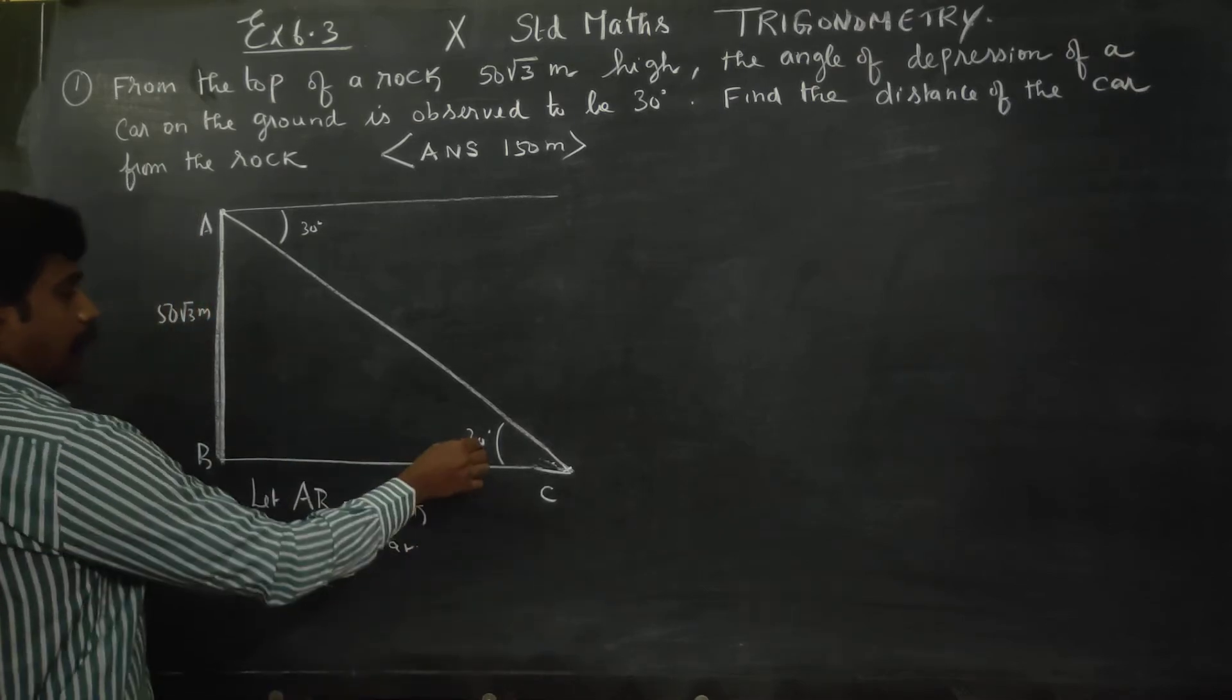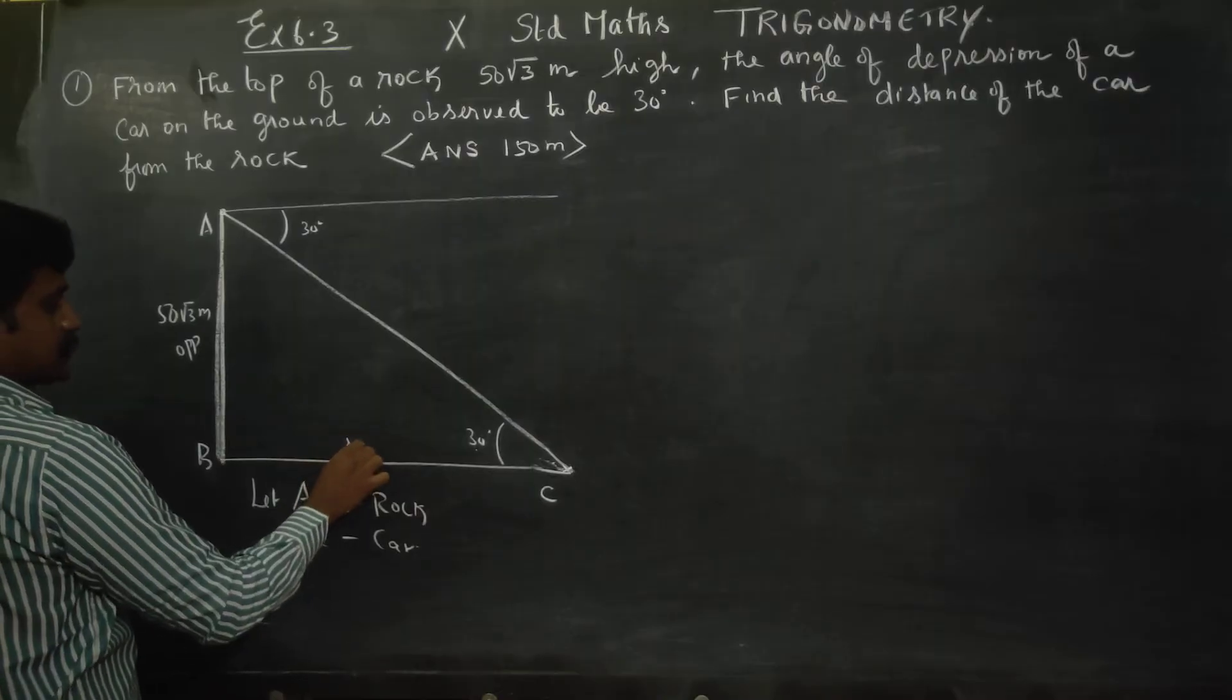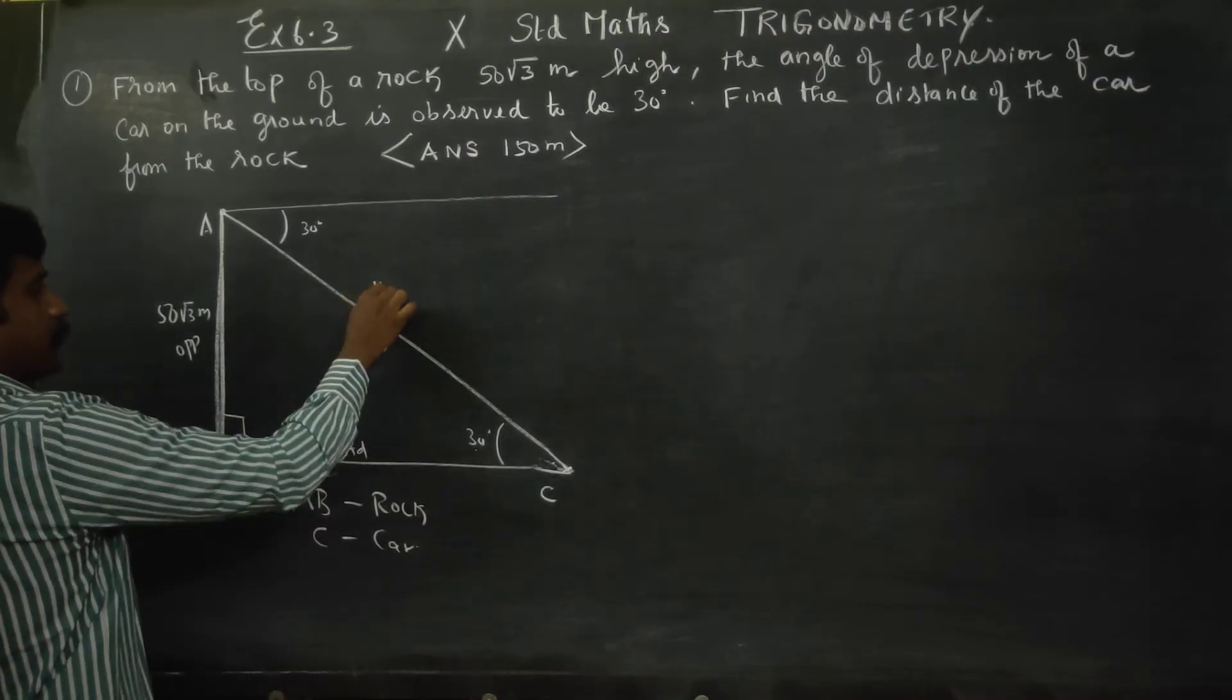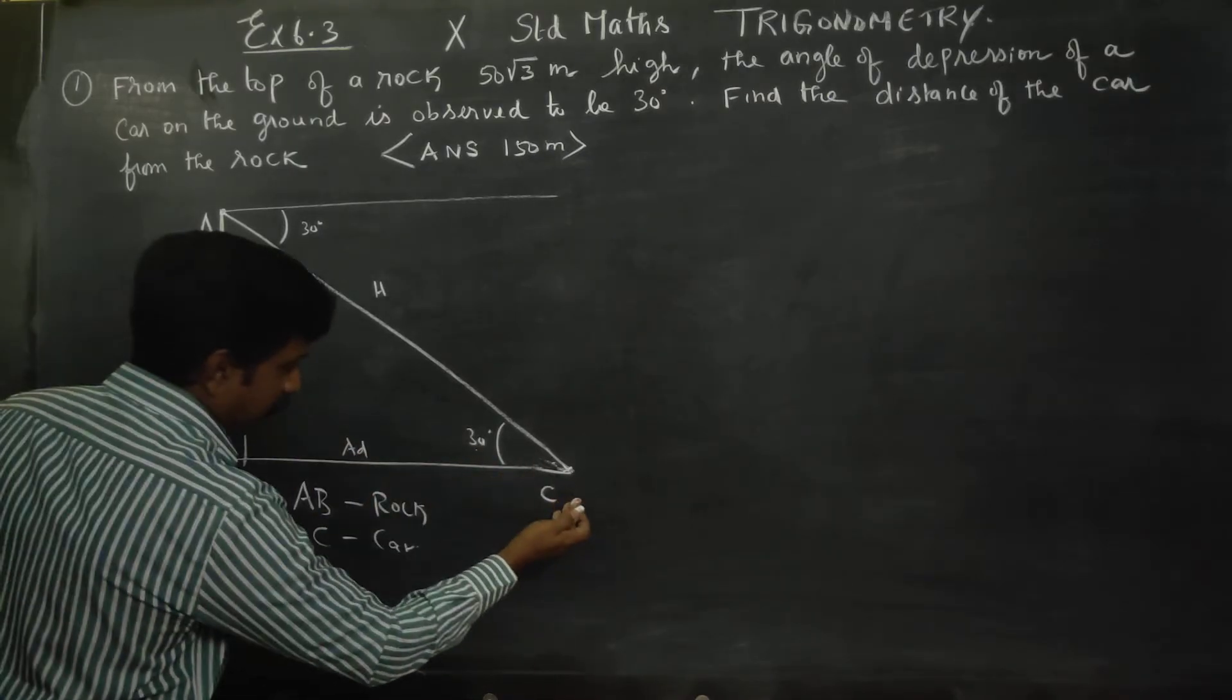Angle of depression is the opposite side, adjacent side. 90 degree is the hypotenuse. That's the distance of the car from the rock.